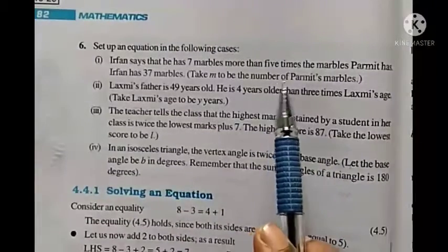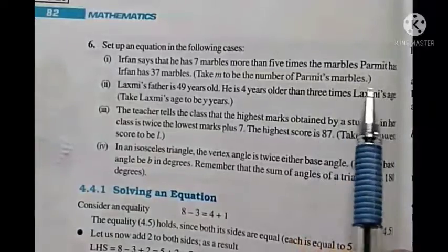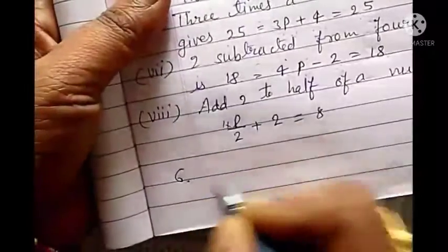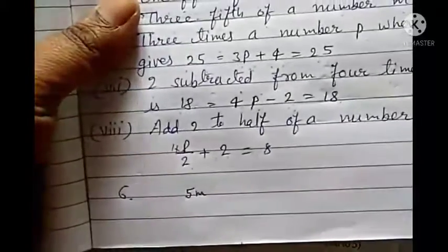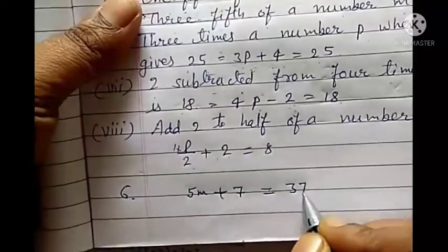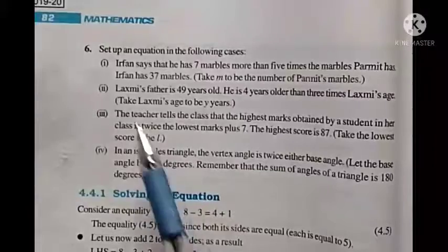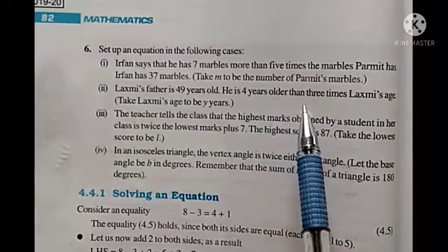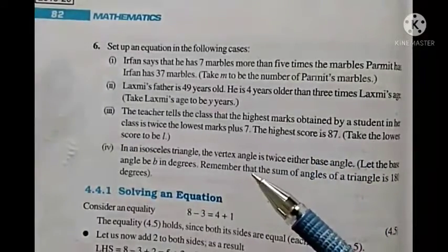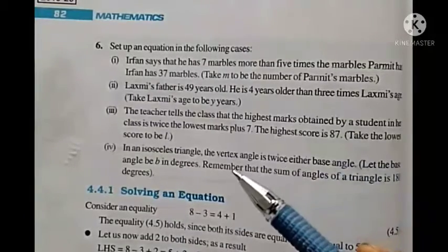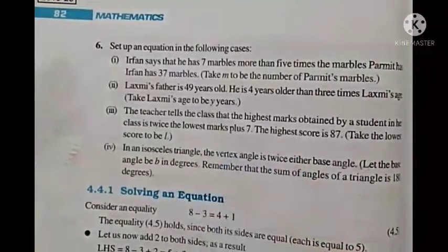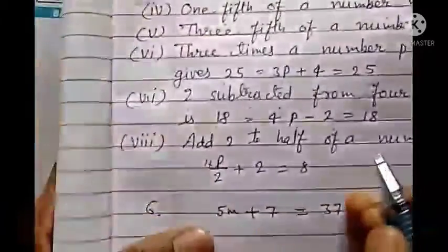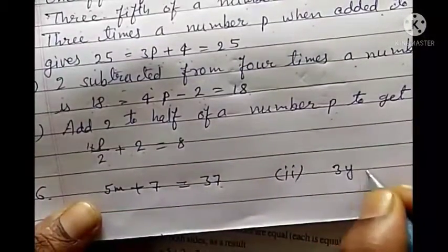So if Parmit's marbles are m, then the equation is: 5m plus 7 equals to 37. Second word problem: Laxmi's father is 49 years old. Three times Laxmi's age plus 4 gives her father's age of 49.